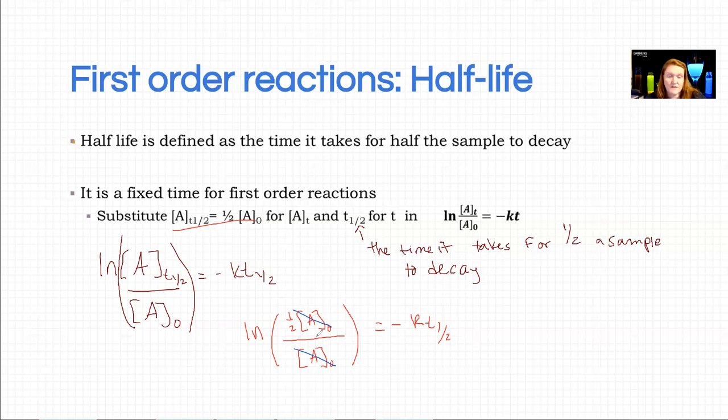Because we are defining how much material is left based on what we start with. So half of it is left, and so you end up with ln of one-half equals negative k times t one-half.